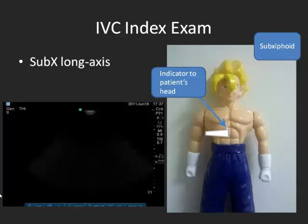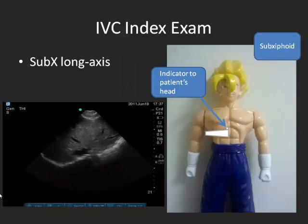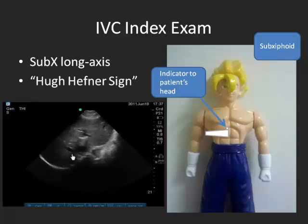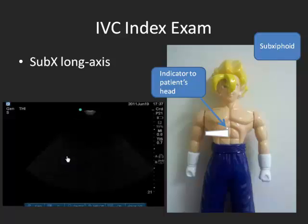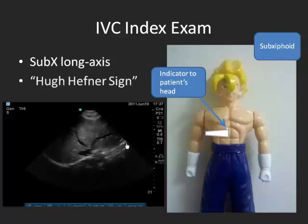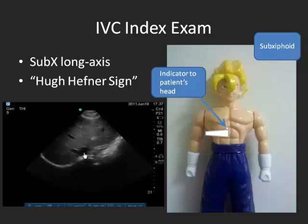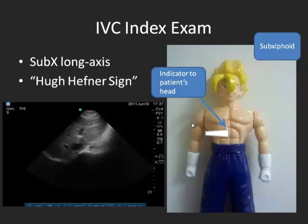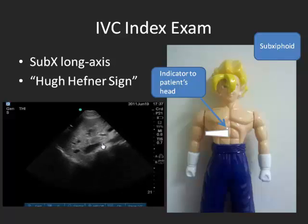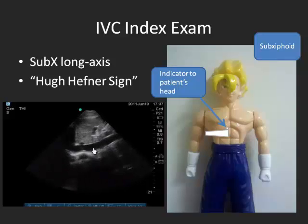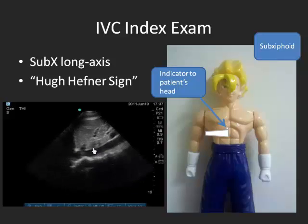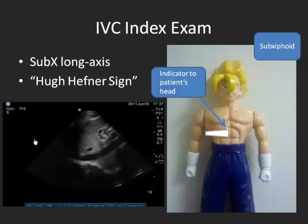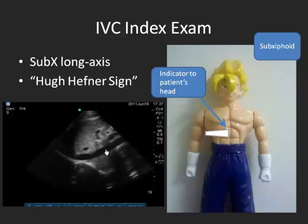I like to go sub-xiphoid as if I'm looking at the heart. When you look more toward the liver — what I call the Hugh Hefner side — you will see the bunny ears, and that is the IVC. Once you see the IVC, rotate the probe toward the patient's head and you'll get a nice long black line, which is your IVC. You can always confirm it by following the IVC to the right atrium.